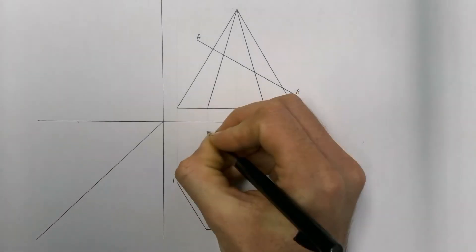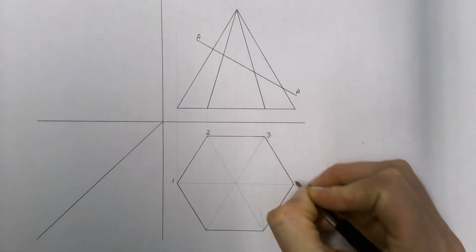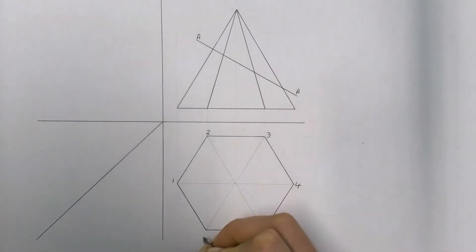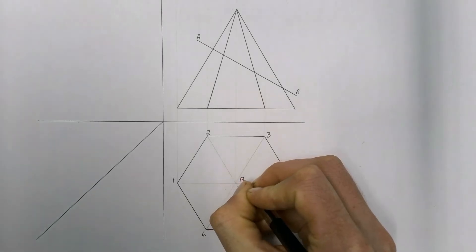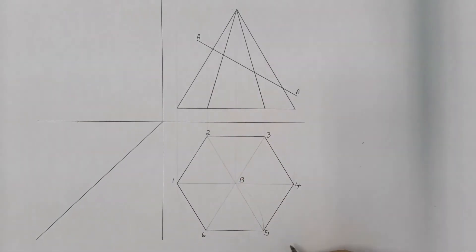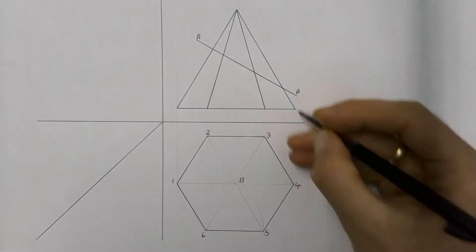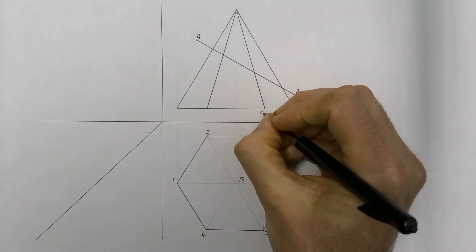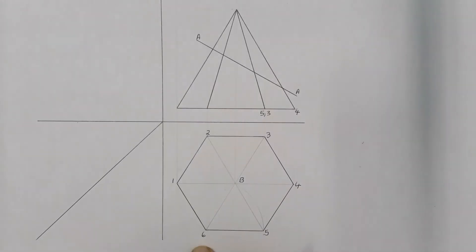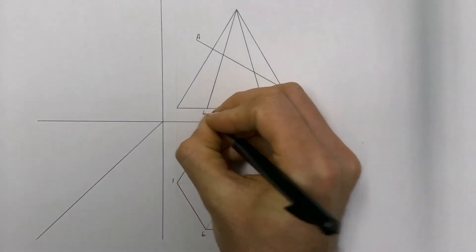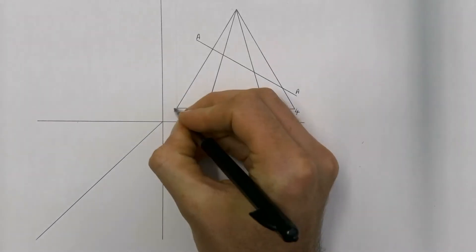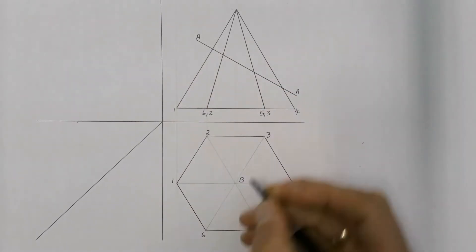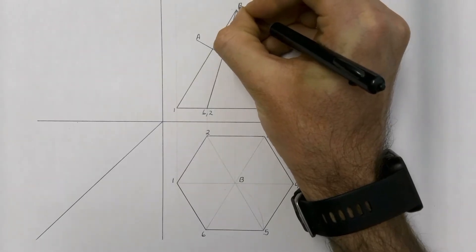I'm going to use numbers for the base points and label the apex or center point of the pyramid as B. Then I've got to transfer that numbering from my top view into my front view. Following my points, that is of course 4. Looking from the front view from this direction, you'll see 5 first and then 3, so this is labeled 5,3. Here you see 6 first and then 2, so label this 6,2, and then 1, and then B — the apex — labeled up there.